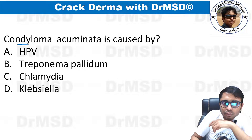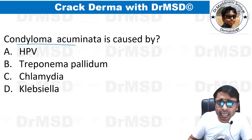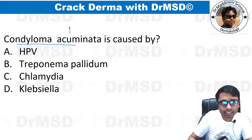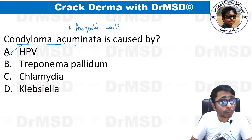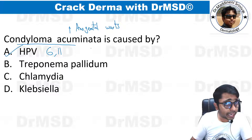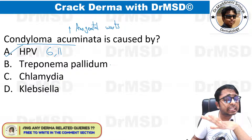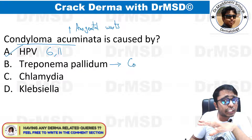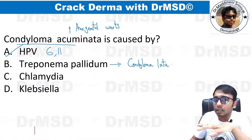Condyloma acuminata — also called anogenital warts — is caused by HPV, human papillomavirus. Types 6 and 11 are associated with anogenital warts. There is also condyloma lata, which is caused by Treponema pallidum and is seen in secondary syphilis — a very important differentiator.